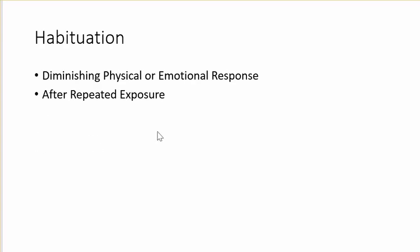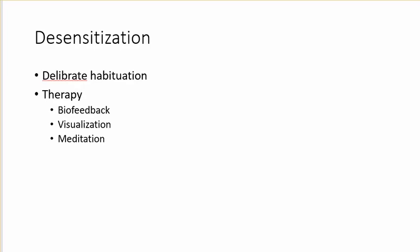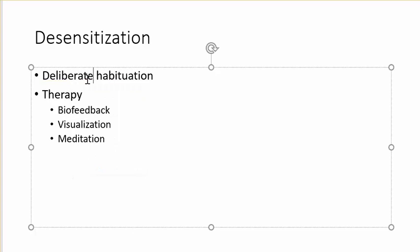Habituation is a diminished physical or emotional response after repeated exposure. For example, if you live next to an area where people are deer hunting, the first time you hear it in the year it scares you a little bit, but over the course of deer hunting season it's less and less scary each time — that's habituation. Desensitization is deliberate habituation — maybe somebody's really scared of elevators, so the first hundred times they ride one, we use biofeedback, visualization, or meditation. After some time, they're fine.